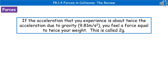Something you may have heard about, particularly around theme park rides, is something called g-forces. You might have been told you've experienced a turn equivalent to 2g or 3g. That is literally looking at the acceleration due to gravity and comparing what you're experiencing to that. If the acceleration you experience is about twice the acceleration due to gravity — which is 9.81 metres per second squared — then you feel a force equal to twice your weight, and that's 2g. Three times would be 3g, and so forth.